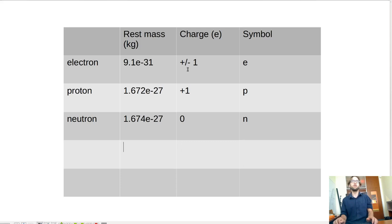And then we have a couple more that we're interested in. So let's talk about photons or light. Photons have zero mass, zero charge, and we denote it with the symbol gamma.